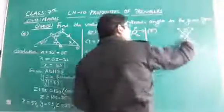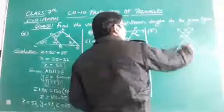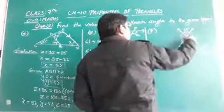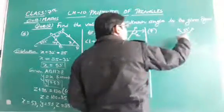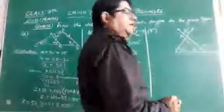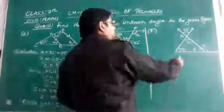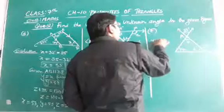Now, come to this question. Again, we will calculate the unknown value that is x, y, z. So, x will be equal to 55. Because, we know that when two lines cross each other, then vertically opposite angles are always equal. So, x is 55.